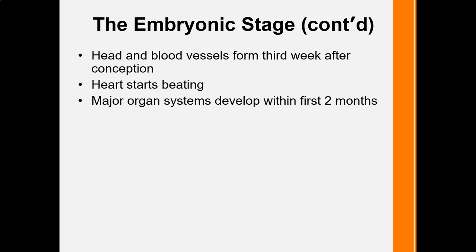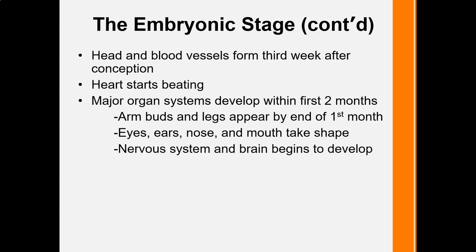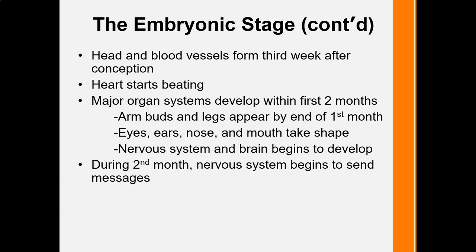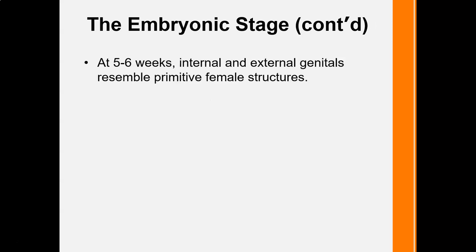The heart will begin to beat, and major organs are developing within the first two months. Arm buds and legs appear by the end of the first month; ears, eyes, nose, and mouth are taking form. The nervous system and brain begin to develop during the second month, with the nervous system beginning to send messages. By the end of the embryonic stage, the embryo is about one inch long, weighs about one-thirtieth of an ounce, and you may see tooth buds forming.